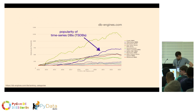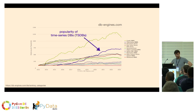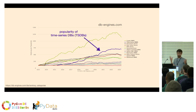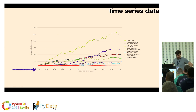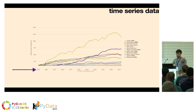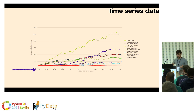I found this website, dbengines.com, that tracks the popularity of database systems. Apparently in the last 10 years the popularity of time series databases has been rising, second only to graph databases. But really what I want to introduce with this plot is what time series data is. Time series data is really any kind of data that is indexed, graphed by, sorted by time. So whenever you see that time is on the x-axis, then it's time series data.